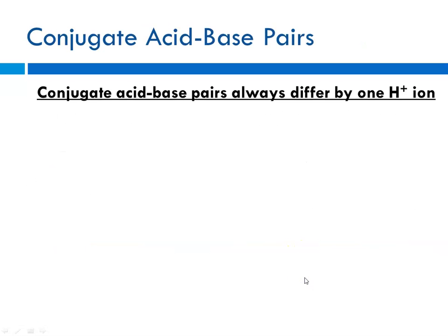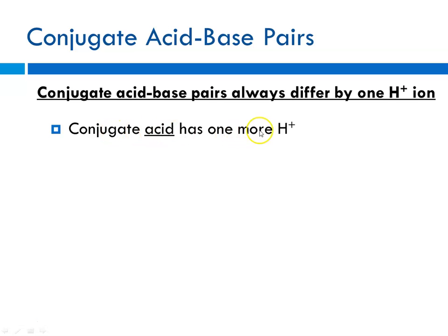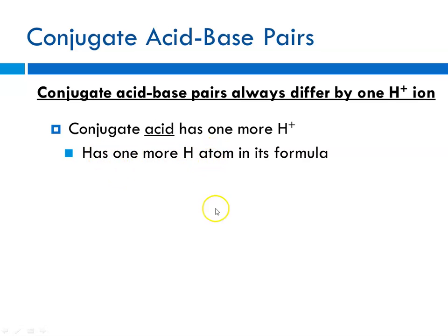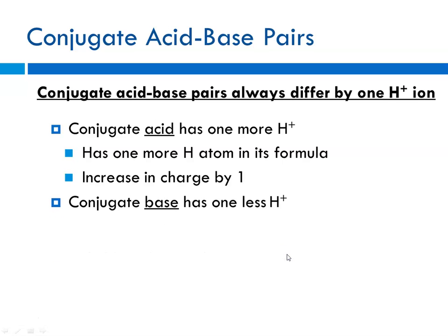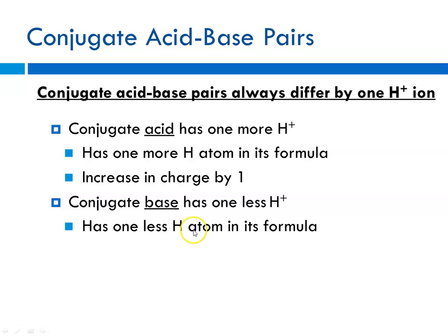Conjugate acid-base pairs always differ by one proton. The conjugate acid has one more proton than the base — one more H atom in its formula — and its charge increases by plus one because you're adding an H-plus to it. The conjugate base has one less proton, one less H atom in its formula, so the charge has decreased by one.